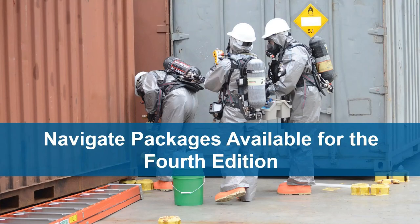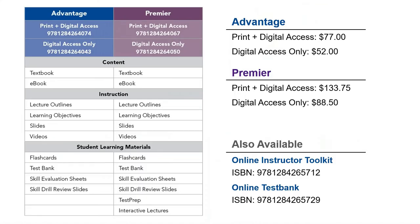We offer a variety of resources to help support both the instructor and the student. Our Navigate package offerings include both an Advantage and a Premier version. The Advantage package includes the textbook, e-book, lecture outlines, learning objectives, slides, videos, flashcards, test bank, skill evaluation sheets, and skill drill review slides. The Premier version includes these same resources, plus is further enhanced with test prep and interactive lectures. For instructor support, we offer an online instructor toolkit as well as a test bank.